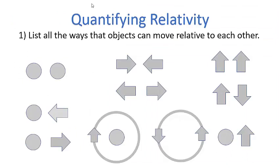Here are all the ways I could think of that objects can move relative to each other. The first case is trivial — the circle in my schematic is an object not moving, and an arrow is a moving object. So: two objects near each other not moving; one object not moving and one moving towards it; one not moving and one moving away; two objects moving towards each other; two moving away from each other; two objects in parallel motion; and two objects moving past each other.